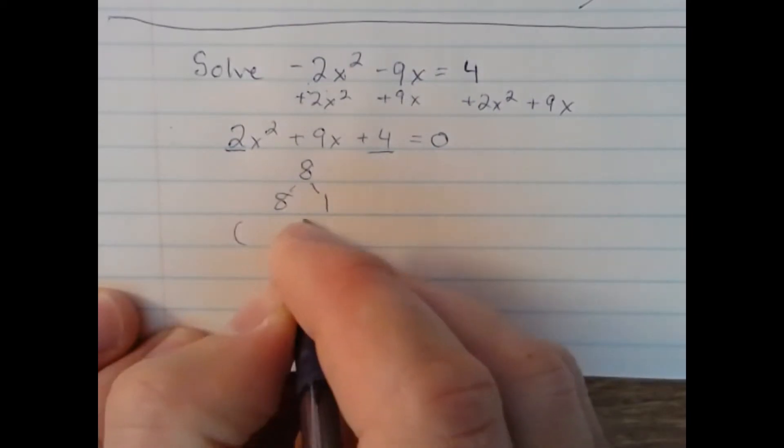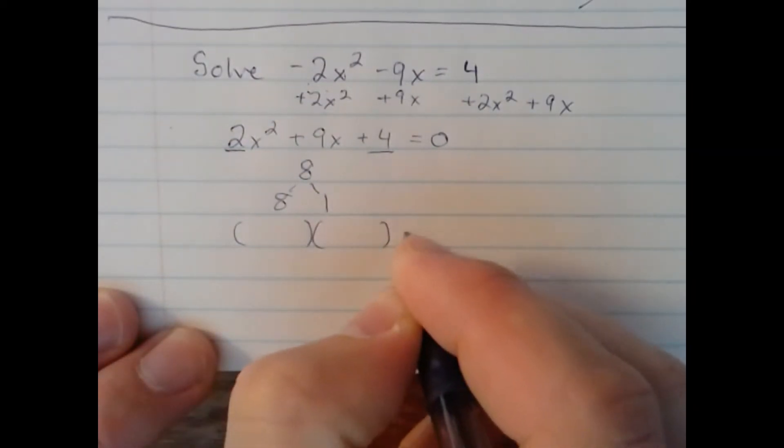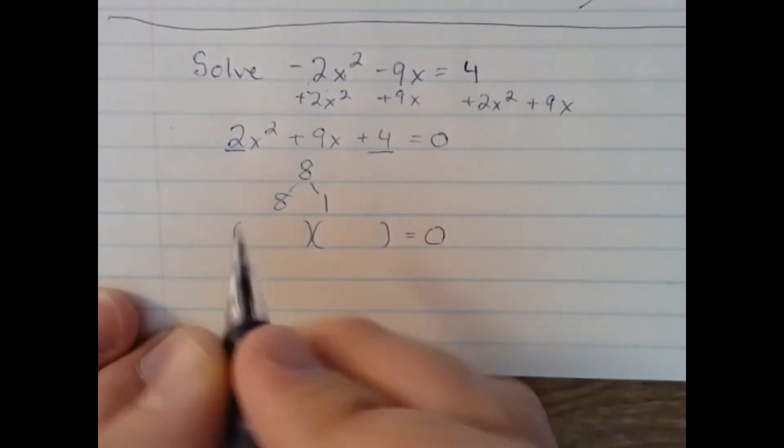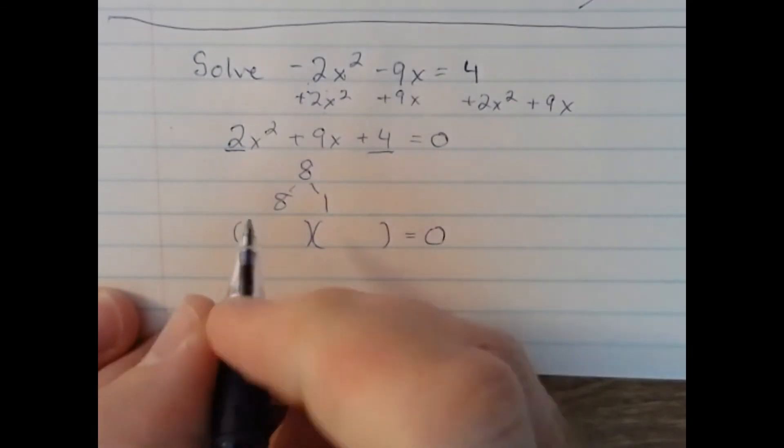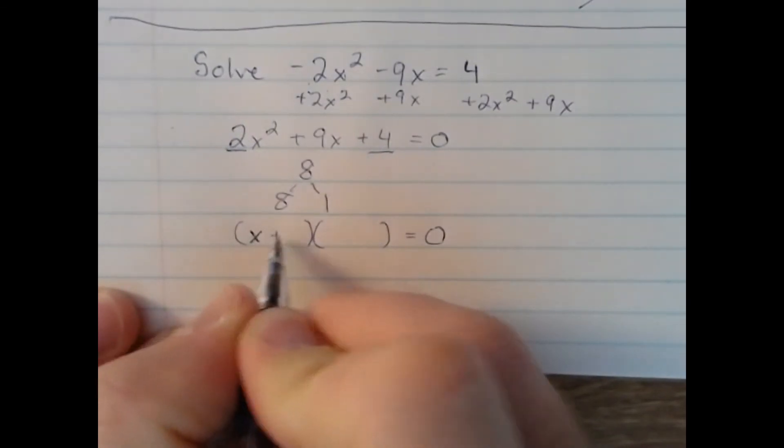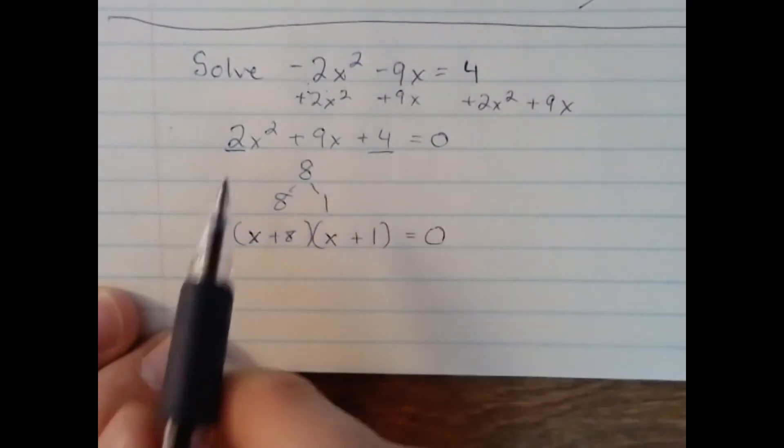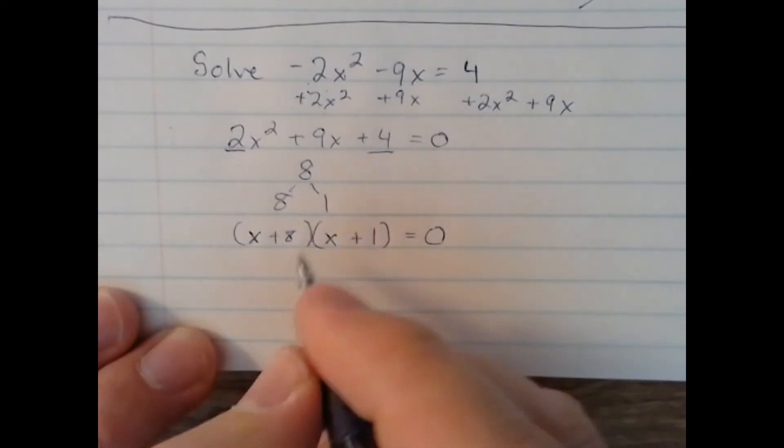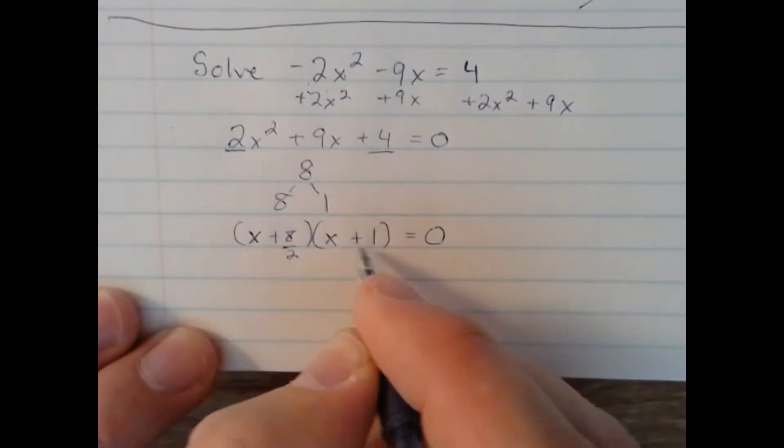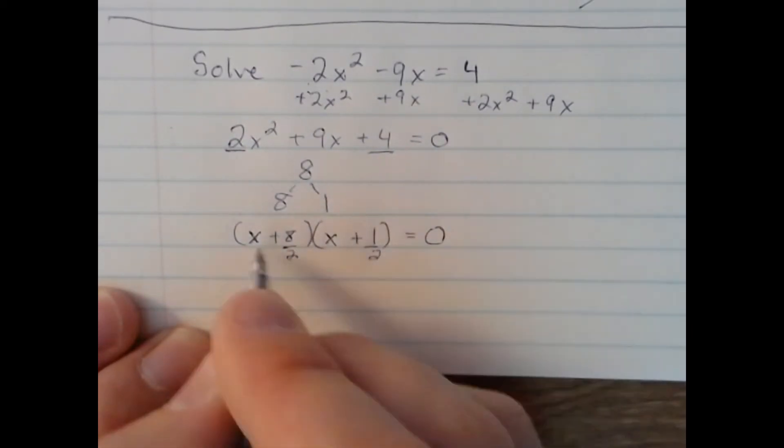So I'll set up a structure to my answer. It isn't the final answer, but it's like a step before: (x+8)(x+1). And then I'd use my A term, which is 2, and divide that into each of the numbers in the two binomials.